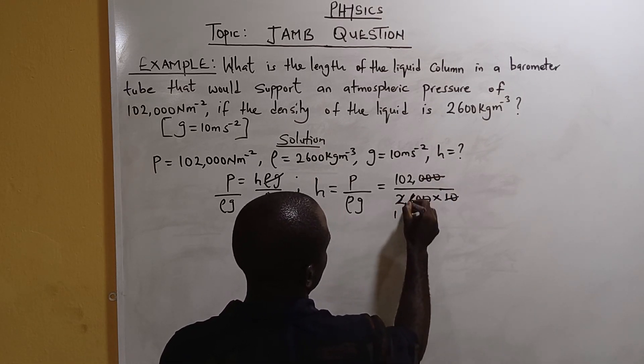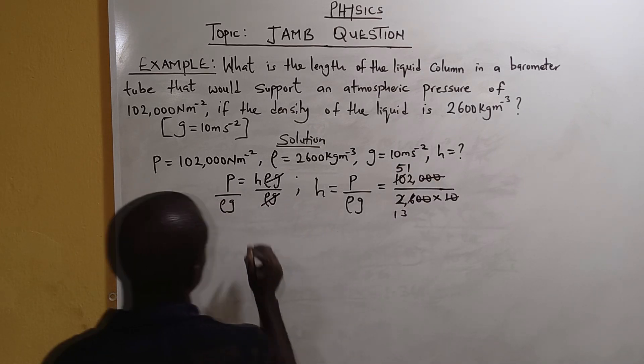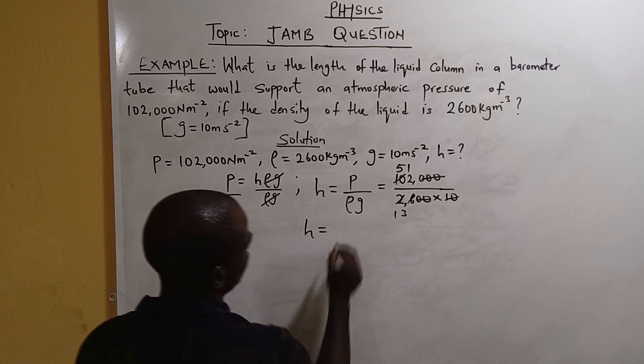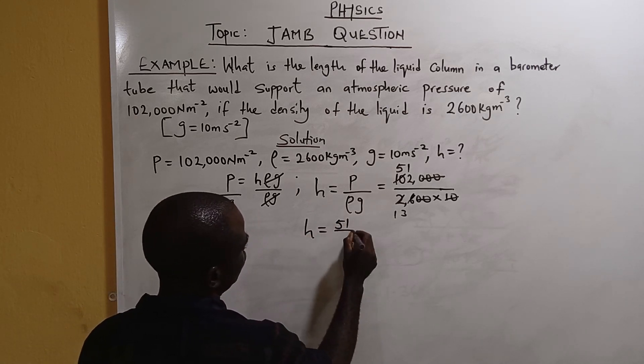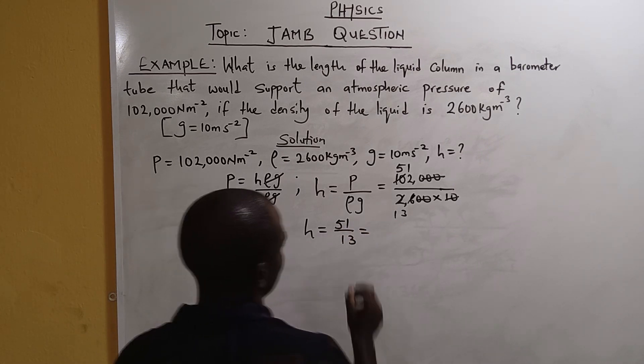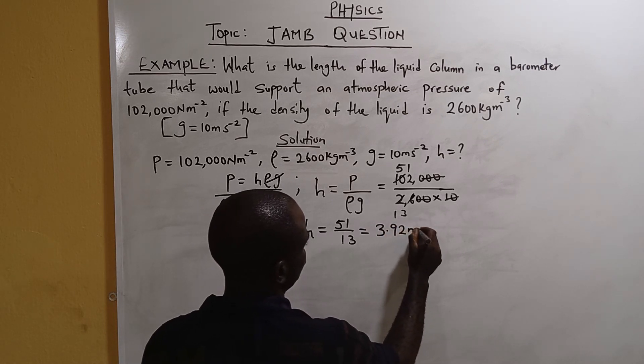We have 51 divided by 13. If you divide it, you have 3.92 meters.